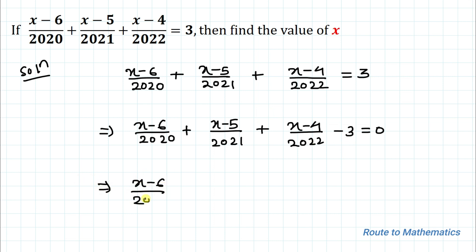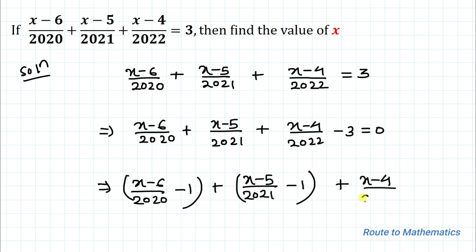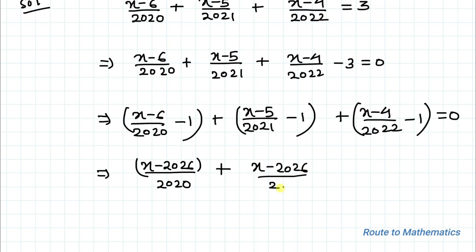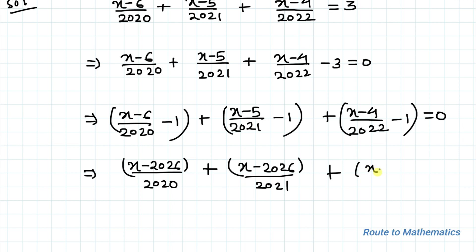Now let's write minus 3 as: (x minus 6) divided by 2020 minus 1, plus (x minus 5) divided by 2021 minus 1, plus (x minus 4) divided by 2022 minus 1, equals 0. Taking LCM in each term, 2020 multiplied with minus 1 gives x minus 2026 divided by 2020. Similarly, we get x minus 2026 divided by 2021, and x minus 2026 divided by 2022.